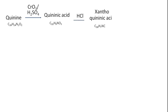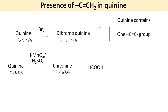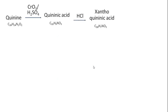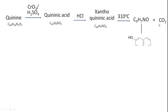Quinic acid upon treatment with HCl gave xanthoquininic acid, differing by CH2 — most probably by demethoxylation. Upon further heating, xanthoquininic acid underwent oxidative degradation evolving carbon dioxide, clearly indicating a carboxylic acid unit eliminated as CO2. The stable final product was C9H7NO.